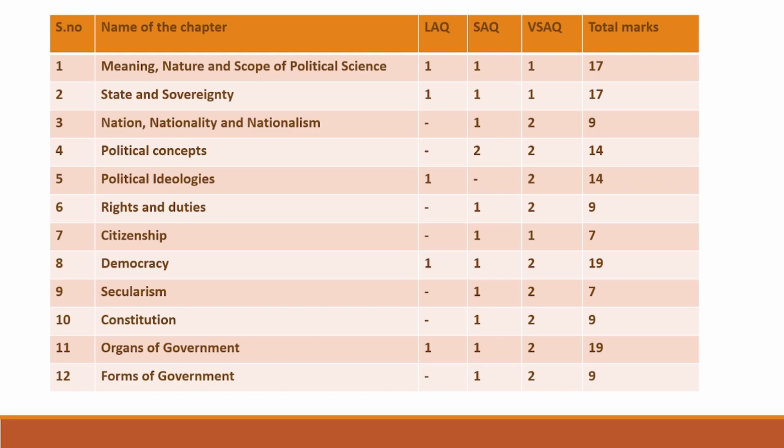Let us now see the chapter wise weightage. Chapter 1: Meaning, Nature and Scope of Political Science. You will get 1 LAQ, 1 SAQ and 1 VSAQ from this chapter. The weightage for this chapter is 17 marks. Chapter 2: State and Sovereignty. 1 LAQ, 1 SAQ and 1 VSAQ will be asked. The weightage for this chapter is 17 marks.